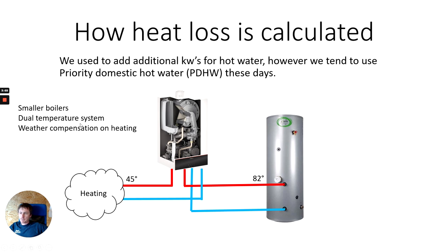With a smaller boiler, dual temperature systems, and weather compensation on the heating, we heat the cylinder up quickly at a higher temperature and then revert back to a lower temperature heating system to match the heat loss for that given day. The cylinder gets heated to 60°C with a flow temperature of around 65°C to kill any bacteria and legionella.